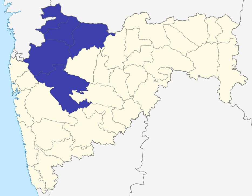The Ahmednagar district is under proposal to be divided, and a separate Sangamnar district be carved out of the existing Ahmednagar district, with the inclusion of the northern parts of Ahmednagar district which include Rahata, Rahori, Sangamnar, Srirampur, Akolay, Kapargaon, and Navasa in the proposed Sangamnar district.